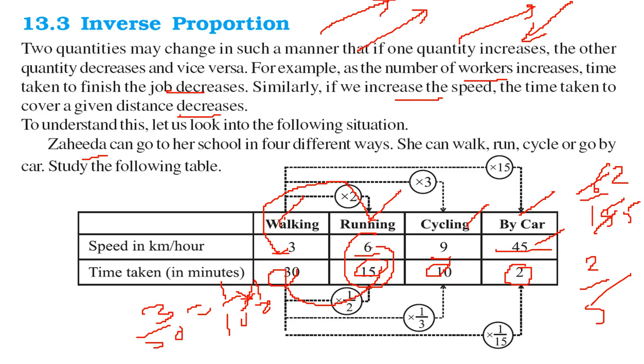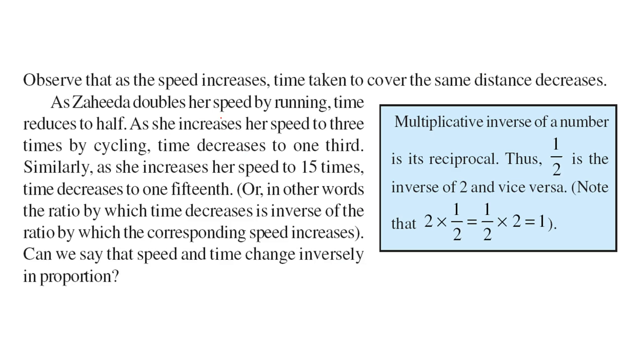Again, if you multiply 3 with 3, you get 9. And if you divide this 30 by 3, you get 10. So this is 2, this is 1 by 2. So this is inverse 3, 1 by 3. This is reciprocal or you can say inverse. So what I am trying to suggest here is, as speed increases, time taken to cover the same distance decreases. Zahida when doubles her speed, the time reduces to half and so on and so forth.